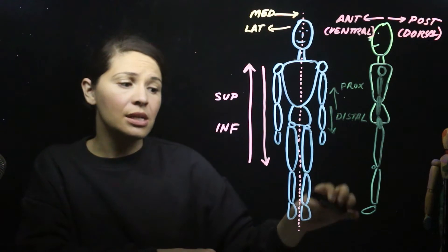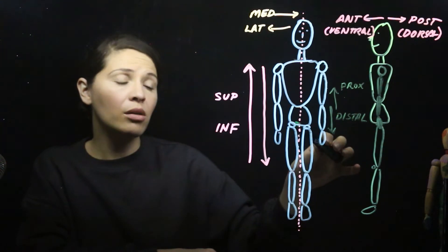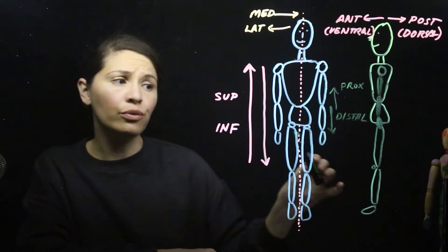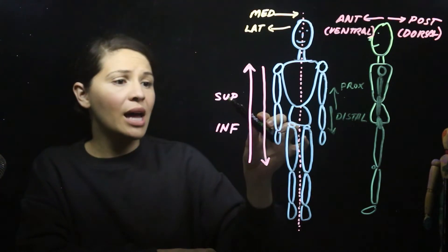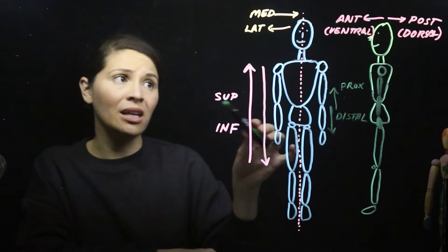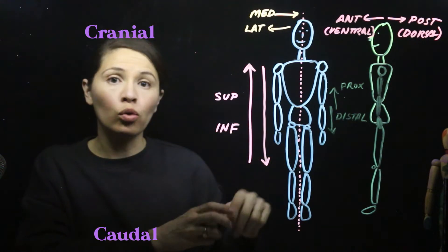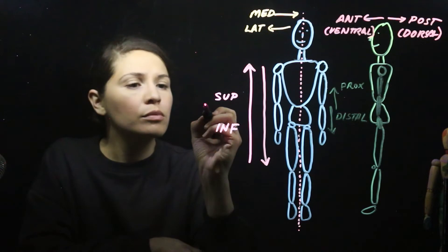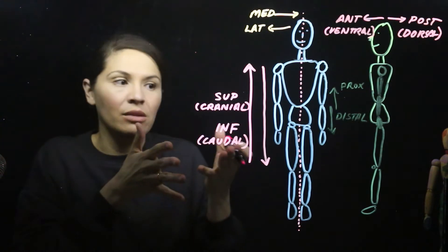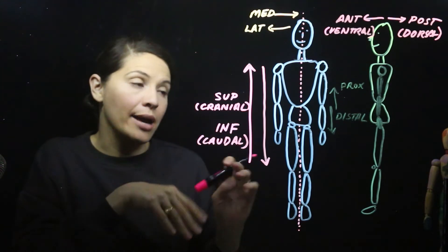You can apply this in the lower limb too: the foot is distal to the pelvis, and the pelvis is proximal to the foot. There are also other terms for superior and inferior — cranial and caudal. Cranial means head and caudal means tail, so towards the head or towards the tail.